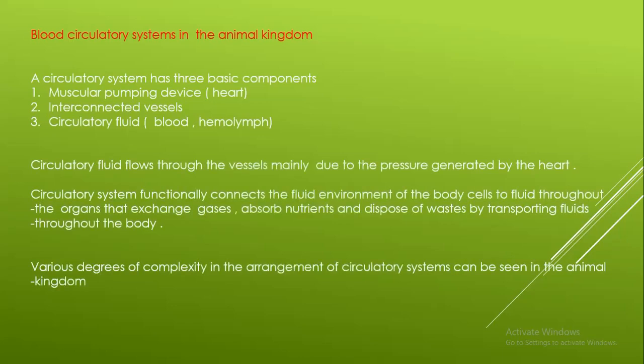The circulatory system in the animal kingdom has three basic models. First, the muscular pumping device — the heart. Second, the interconnected vessels. Third, the circulatory fluid that flows through the vessels mainly due to the pressure generated by the heart.